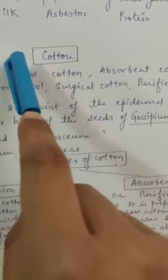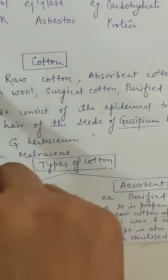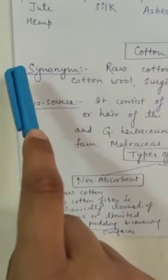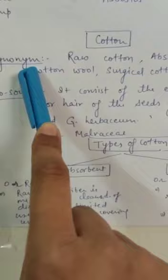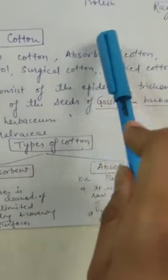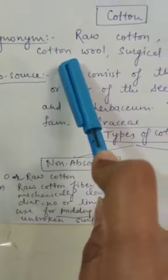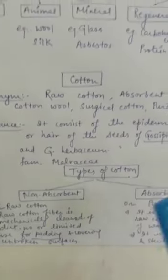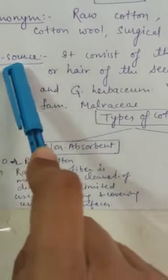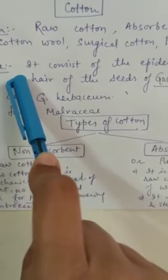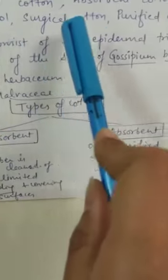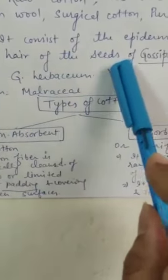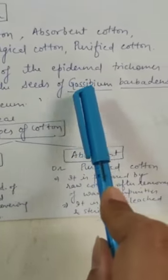Our syllabus has plant fibers, so number one: cotton. What are the synonyms of cotton? Raw cotton, absorbent cotton, cotton wool, surgical cotton, and purified cotton. What is the biological source of cotton? Cotton is obtained from epidermal trichomes or hairs of the seeds of Gossypium